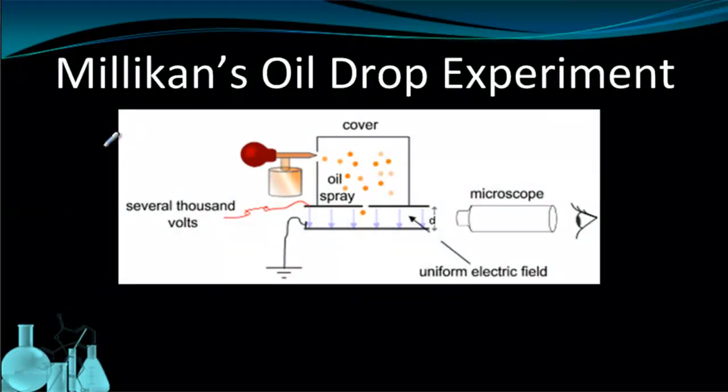All right, here we have a model of Millikan's oil drop experiment, and let's explain what's going on here. First, we have a chamber right here. And in this chamber, you have a little device that sprays oil into it. So here we have all the little oil particles. The next thing I want to point out is that there are two plates, here and here, that are hooked up to a power source. And that power source creates a big electric field between them.